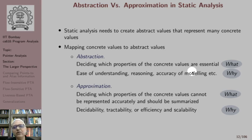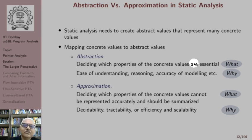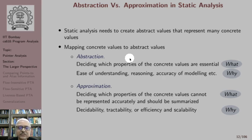When we talk about counting human beings, height and weight are properties that are not essential — we can forego them. We can still accurately model everything in that situation by abstracting a human picture using a stick figure. However, when height and weight are important, modeling a human being using a stick figure does not remain accurate. If we still represent human beings using a stick figure, then we are doing approximation, because we are now giving up on certain properties or values that are important.